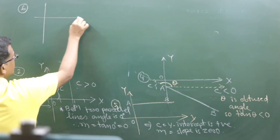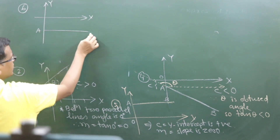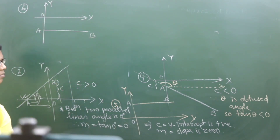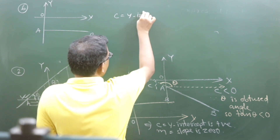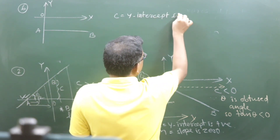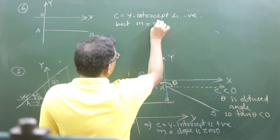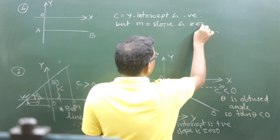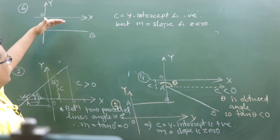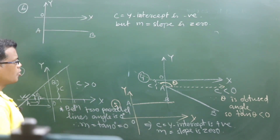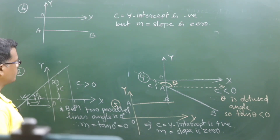If I draw a line like this, here the line — is its y-intercept positive or negative? Tell me. Negative. Correct. This time c, that is the y-intercept, is negative. Y-intercept is negative. But m, that is slope, is 0. So, whether the line drawn parallel to the x-axis is drawn above the x-axis or below the x-axis, so long as it is drawn parallel with the x-axis, its slope will be said to be 0.